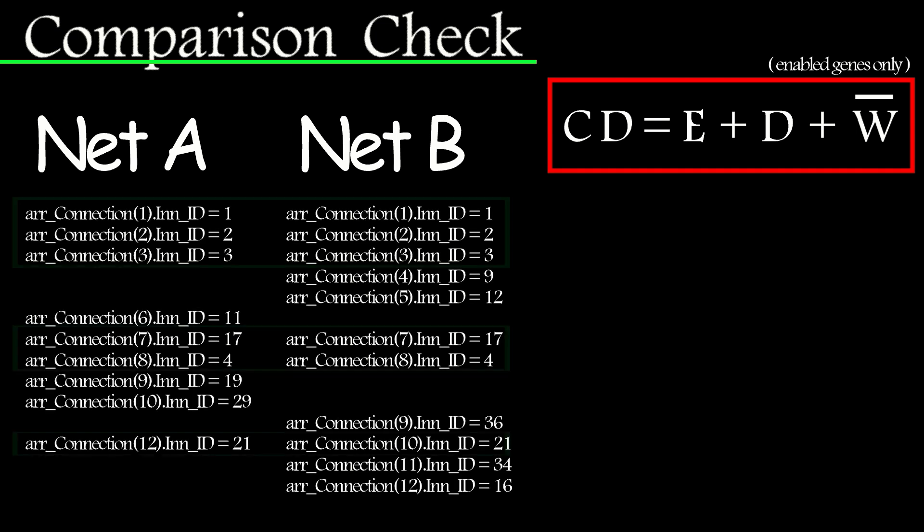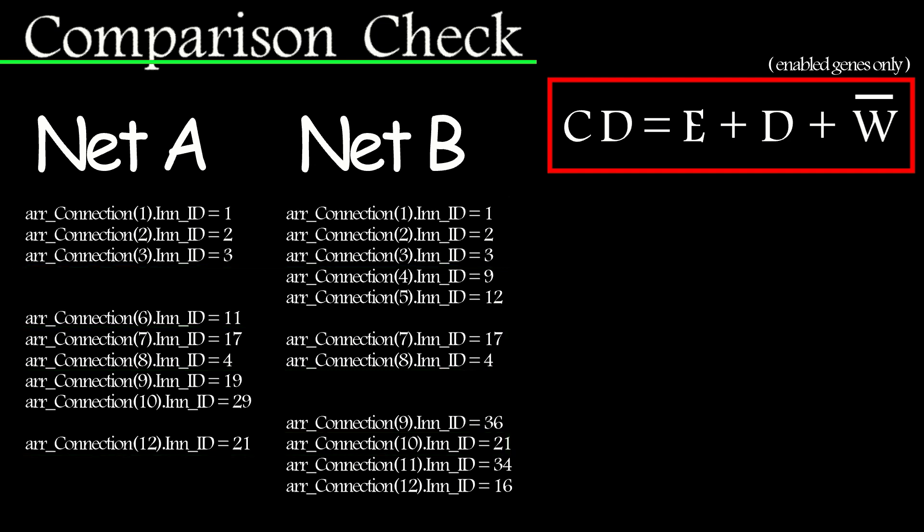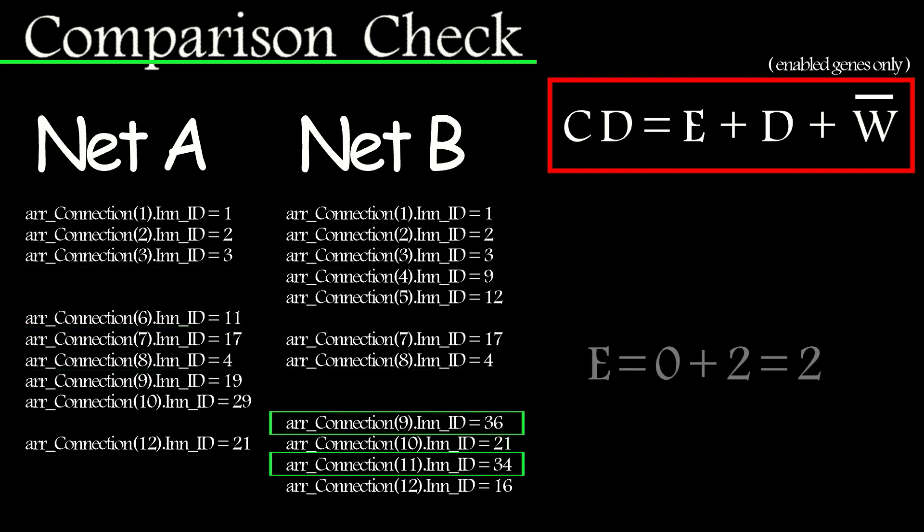In this example, network B is the species one champion, and we're going to compare network A with network B to see if network A belongs in species one. The start of this comparison is driven by the innovation IDs assigned to each connection. Remember that identical connections will have identical innovation IDs, so it's easy to match up connections between the two networks. If we focus on the excess connections, I can see that network A doesn't have any, so that's a zero, and network B has two, with innovation IDs of 34 and 36. These are considered to be excess because their innovation IDs exist outside the range of innovation IDs in network A, which only go from 1 to 29.